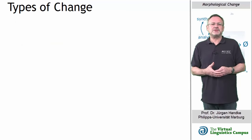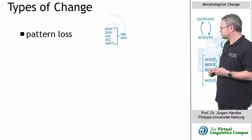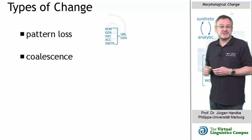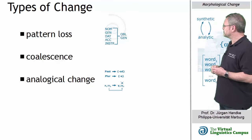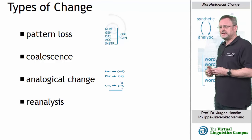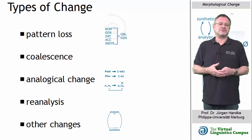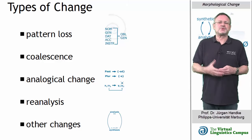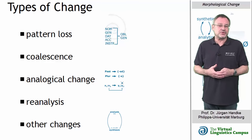The following processes can be distinguished: pattern loss, coalescence, analogical change, reanalysis, and some further changes. Let us look at these processes of morphological change in more detail.